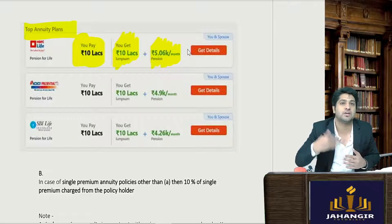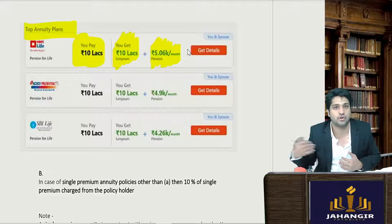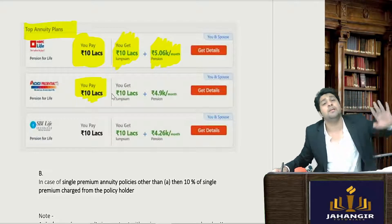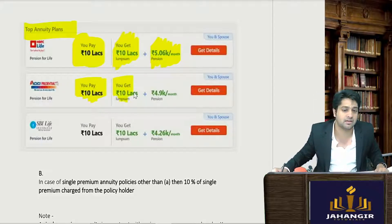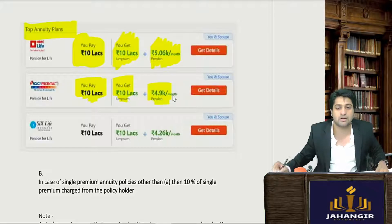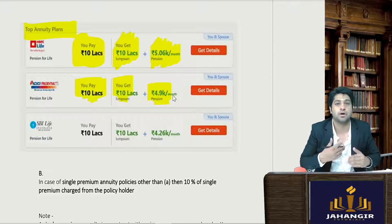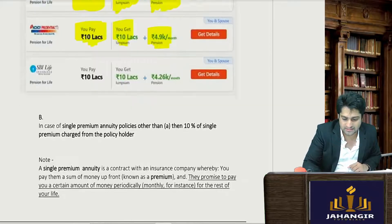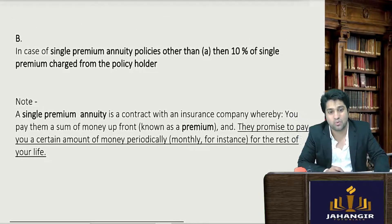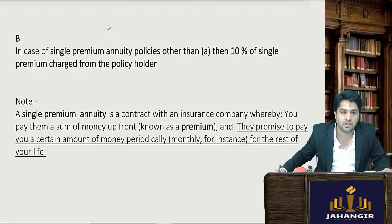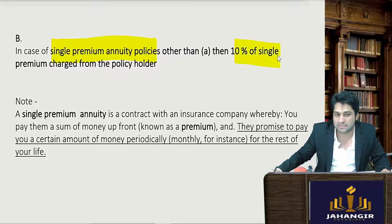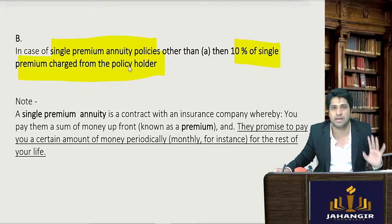Maybe you wait 20 to 30 years to get that kind of figure. ICICI Prudential is also offering: pay 10 lakhs today, and in future after a certain number of years they will give you a lump sum 10 lakhs plus approximately 5,000 rupees income per month — this is like a retirement plan being made for you. In such cases, since it is a one lump sum premium being paid, the value of supply is 10 percent of that figure in case of a single premium annuity policy.